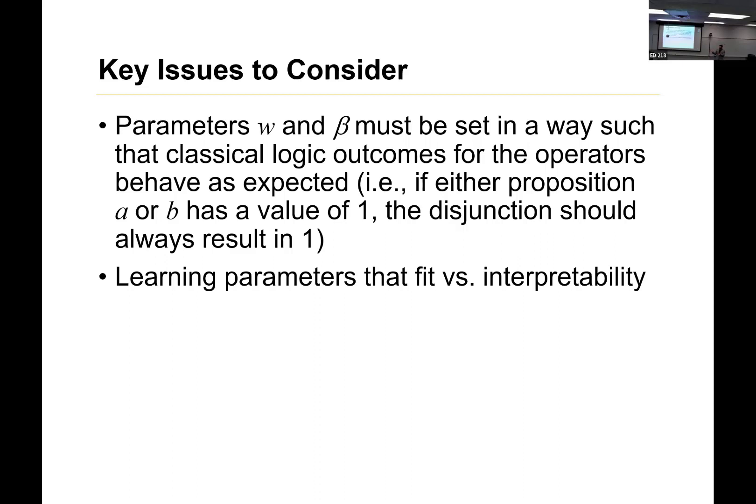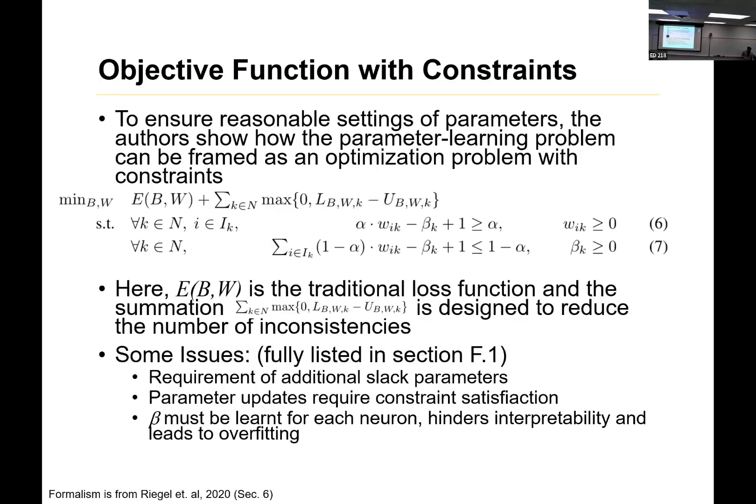But what does the bias mean in that case? It's really quite annoying when you think about it. You're doing all this work for explainability, and you have this term, no one's quite sure what it means. Now, here's the thing, because of the logical structure, the correct way to frame this optimization problem is with constraints. So we frame this as an optimization problem with constraints, because we want to force those parameters to behave in a way where our stuff on classical inputs gives classical outputs.